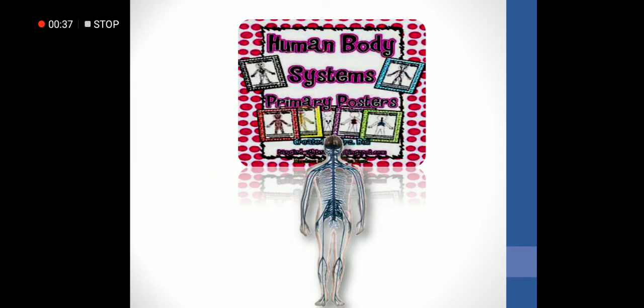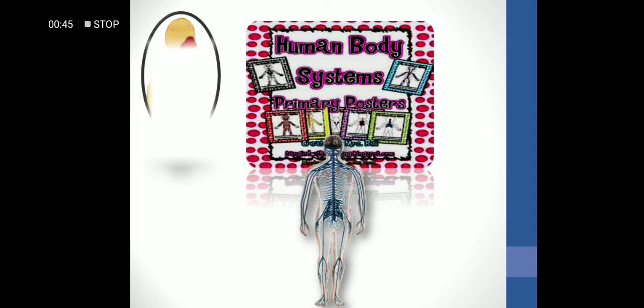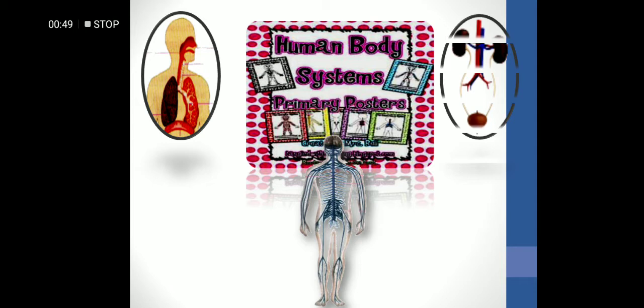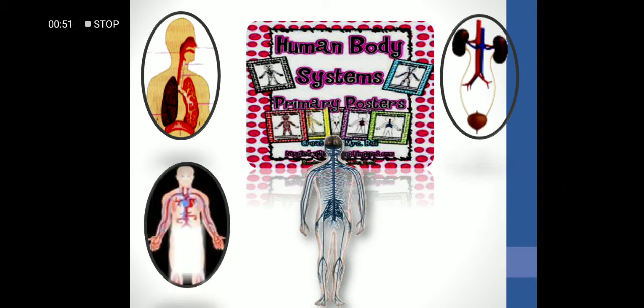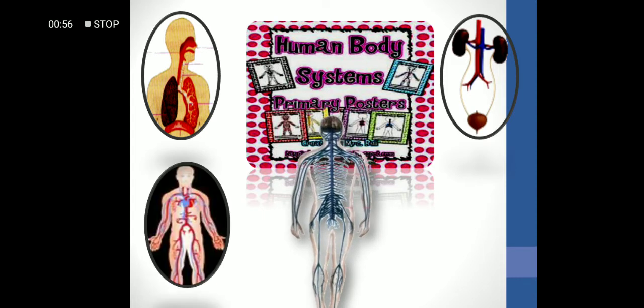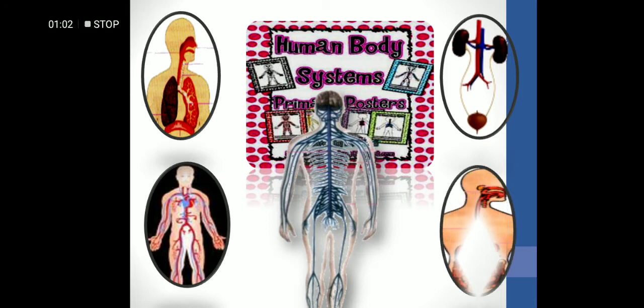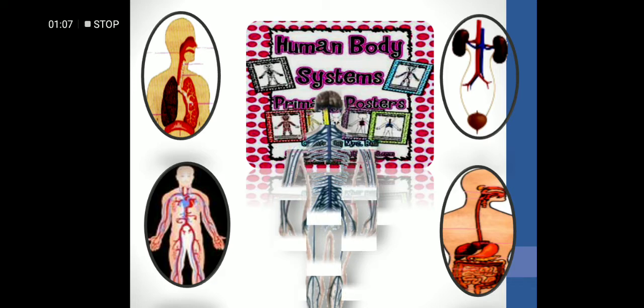As we see in the pictures, our body consists of many systems: the respiratory system, the urinary system, the circulatory system, the nervous system, and our lesson topic, the digestive system. Lesson 1: The Digestive System.